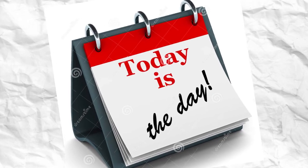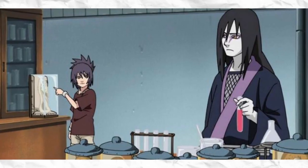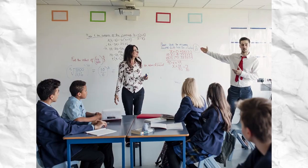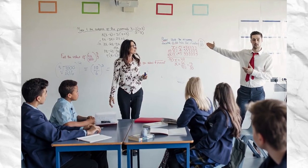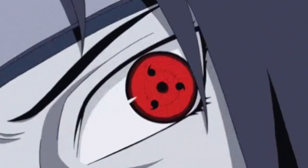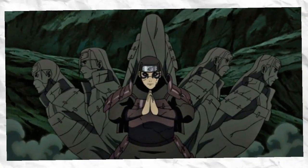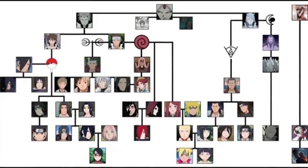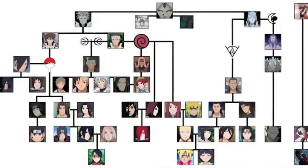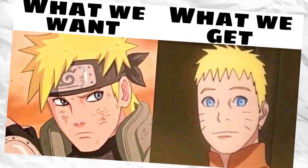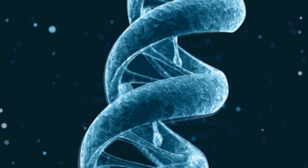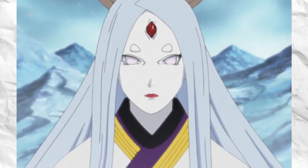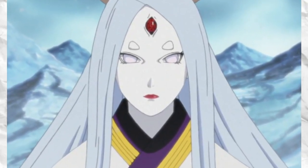Today we're going to be talking about the genetics behind Naruto — why the Senju can't use the Sharingan, why the Uzumaki can't use Wood Release even though they're distant relatives to the Senju, and just the overall science behind the Dojutsu. We're basically going to be focusing on the Dojutsu in this video.